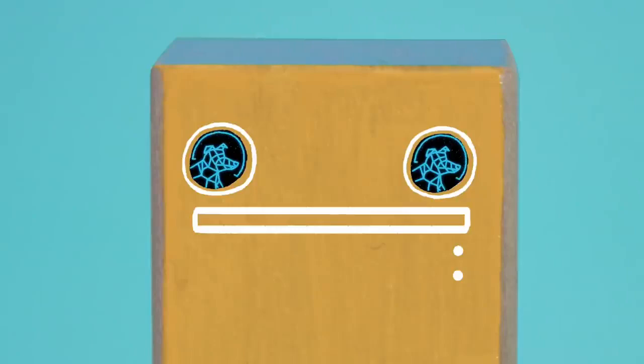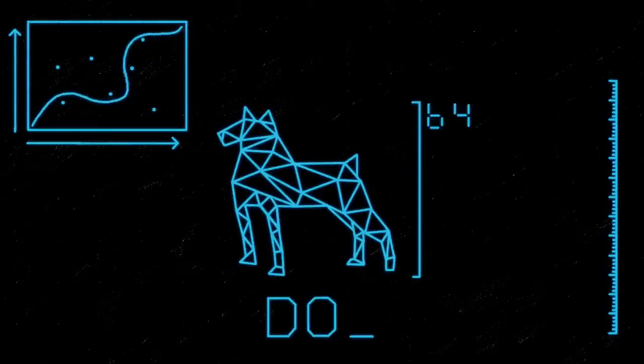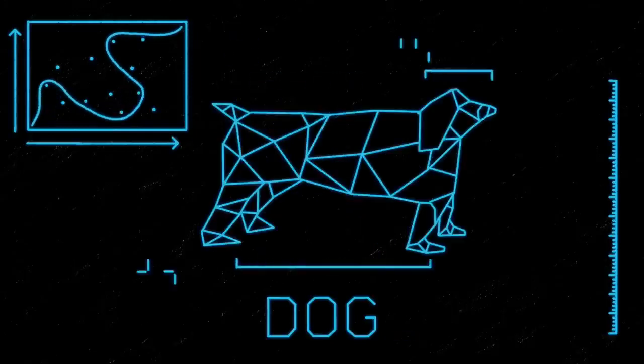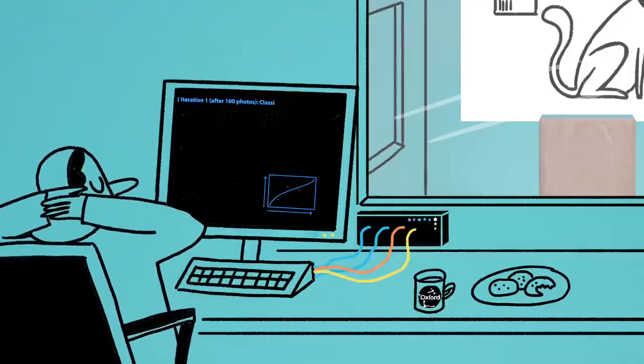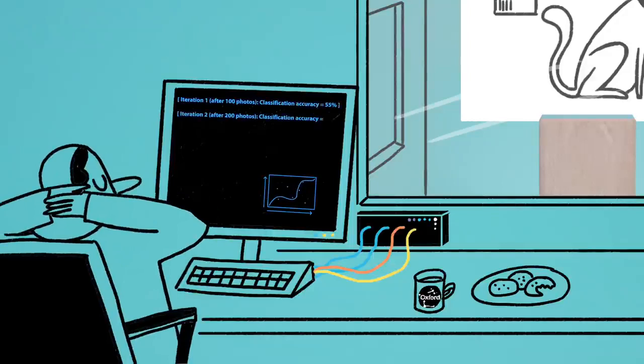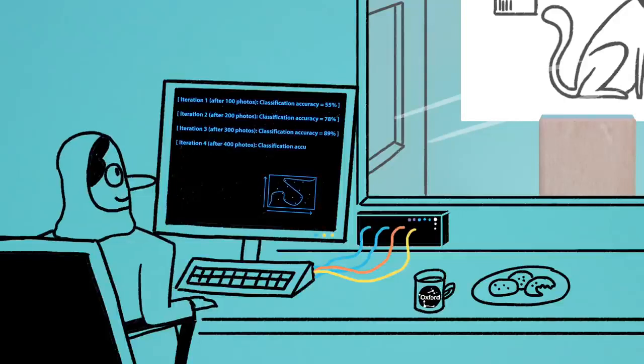It might figure out, on its own, that cats have shorter noses and that dogs come in a larger variety of sizes, and then represent that information numerically, organizing it in space. But crucially, it's the computer, not the programmer, that identifies those patterns and establishes the algorithm by which future data will be sorted.